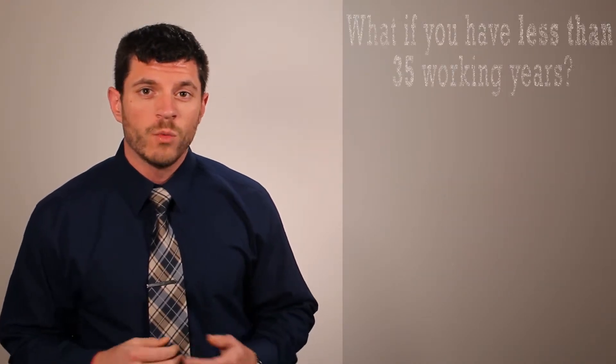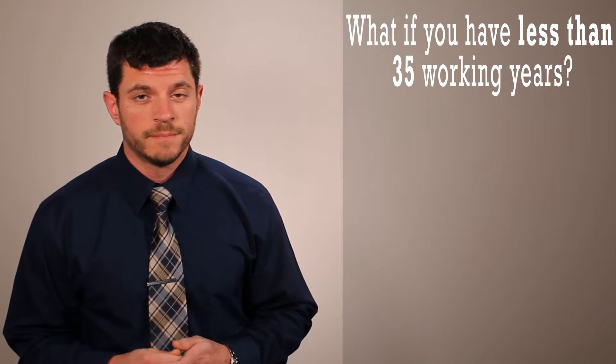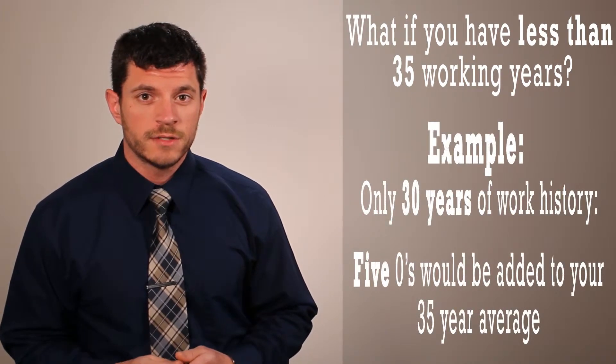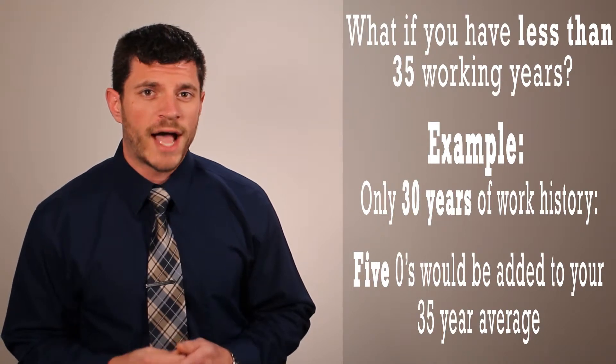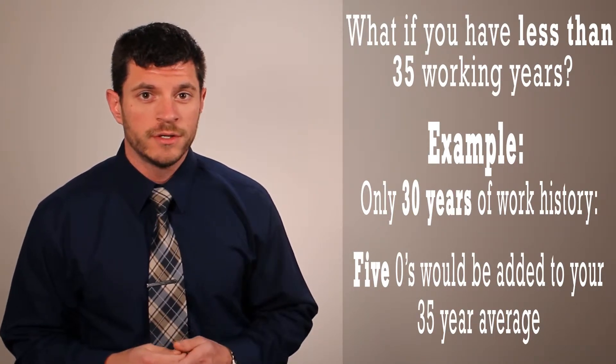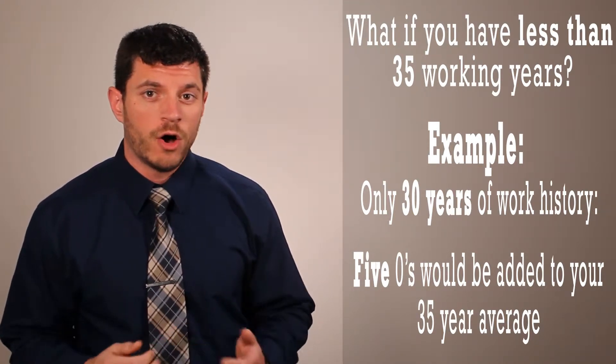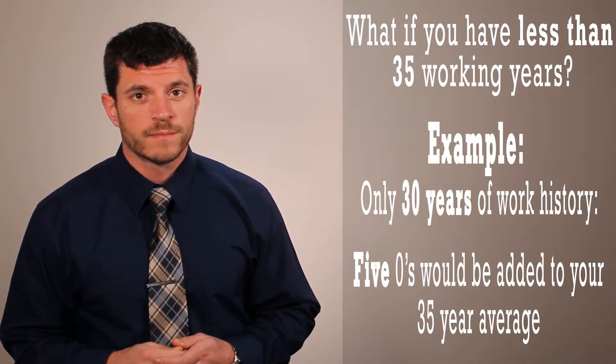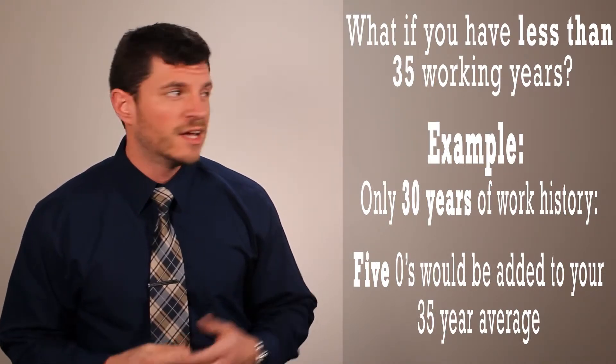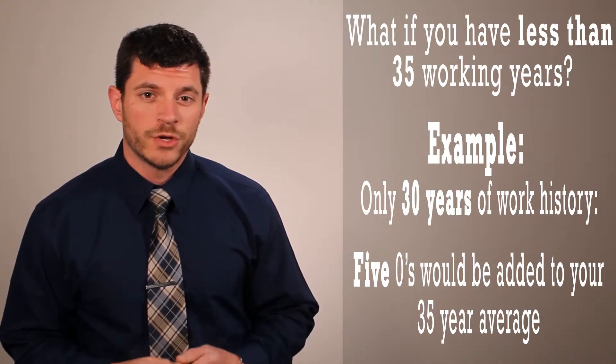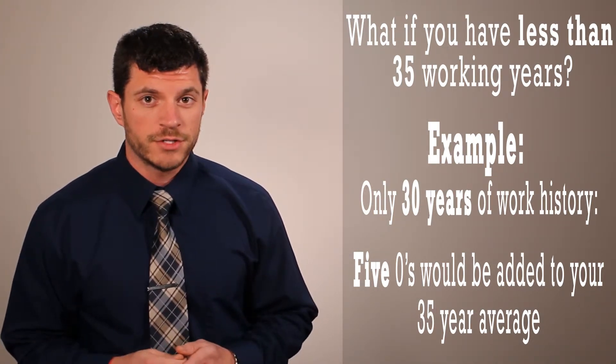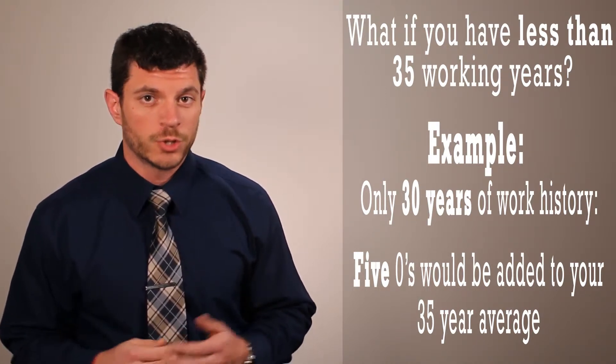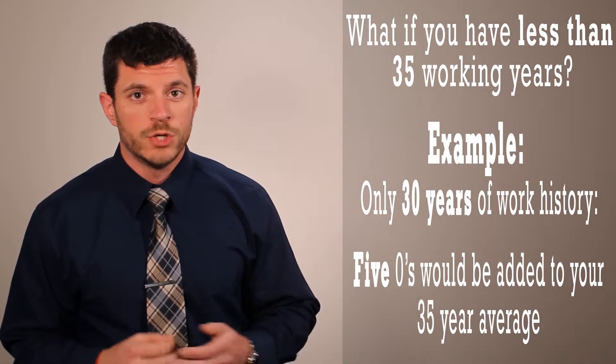But what if you had under 35 years of income? Let's say you had only 30 years of work experience, then Social Security will actually add five zeros and then average out all 35 of those numbers to find your benefit. So in this case and in this scenario, it makes a lot of sense for you to work at least 35 years and have 35 years of income in order to maximize that Social Security benefit that you can receive.